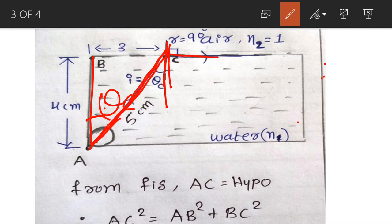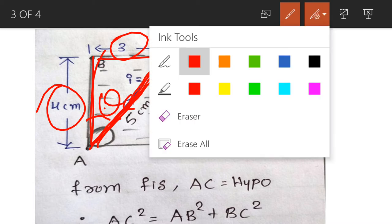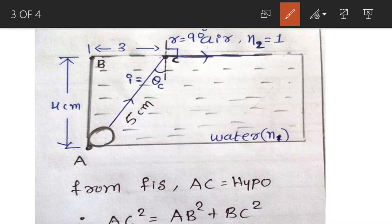We also want to find the side AC, because it will help us in the later part. By applying the Pythagoras theorem, side BC is given as 3 cm and side AB is given as 4 cm, so we can find side AC.